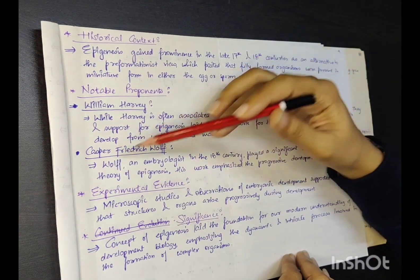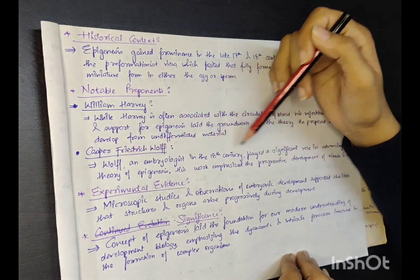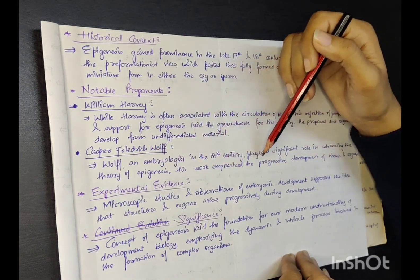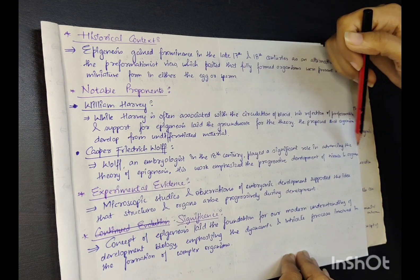Caspar Frederick Wolff, an embryologist in the 18th century, played a significant role in advancing the theory of epigenesis. His work emphasized the progressive development of tissue and organ.